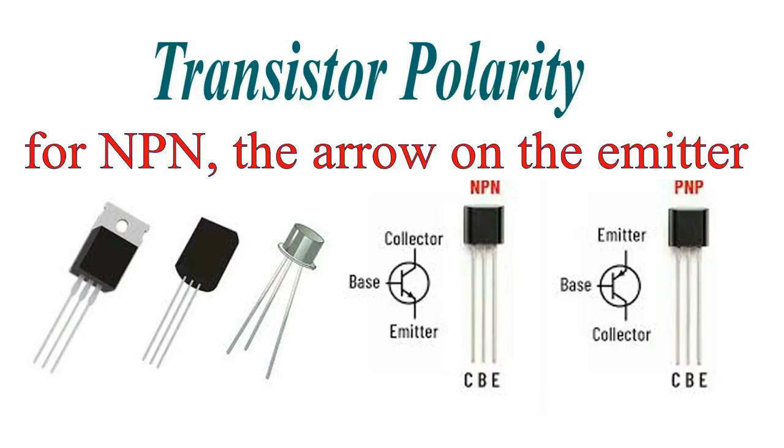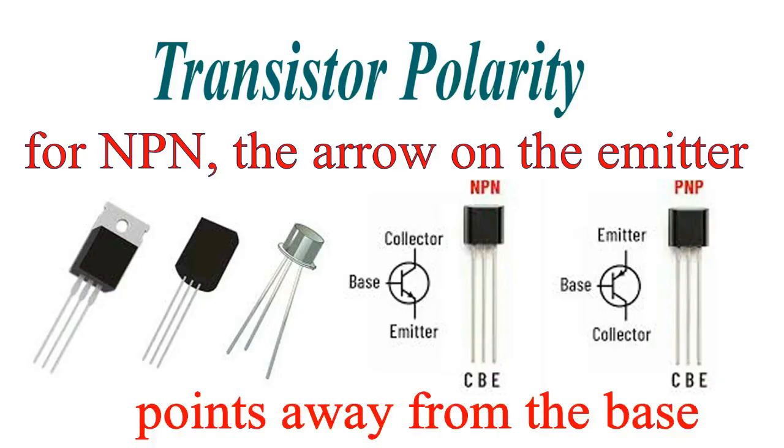For NPN, the arrow on the emitter points away from the base, representing the direction of conventional current flow or positive to negative.